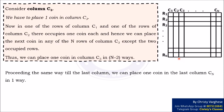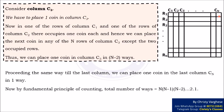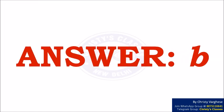Proceeding the same way till the last column, we can place one coin in the last column CN in one way. Now, by fundamental principle of counting, total number of ways equals N into N-1 into N-2 and so on up to 2 into 1. Hence, the right answer to the question is option B.